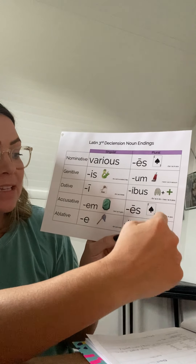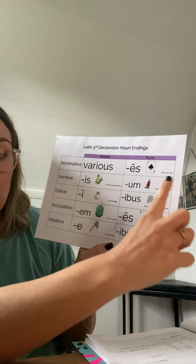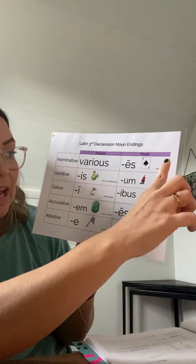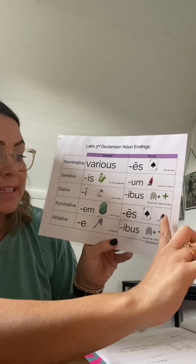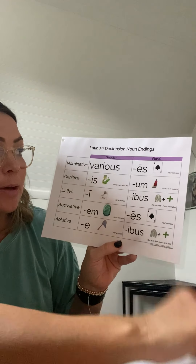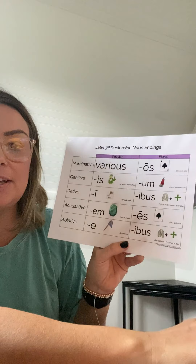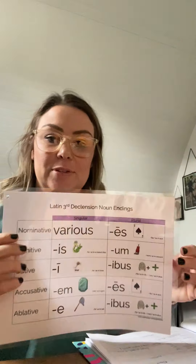Now the plural side. We have ace again — we've seen that. Um, like vacuum — we've seen that. A new one in third declension combines parts of two words: rib gives us the ib sound and the plus sign gives us the us, so it's ibis. Ibis is the dative third declension noun ending. Then another ace and another ibis. So plural: ace, oom, ibis, ace, ibis. Plural third declension. And that's our Latin for week seven.